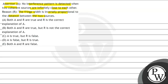We have five statements here. Statement A says both assertion and reason are true and the reason is the correct explanation of the assertion. Statement B says both assertion and reason are true but reason is not the correct explanation. Statement C says the assertion is true but the reason is false. Statement D says assertion is false but reason is true. Statement E says both are false.